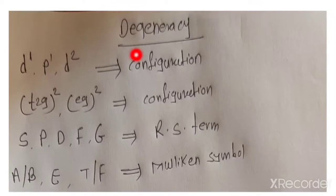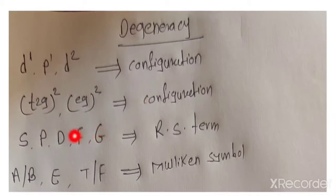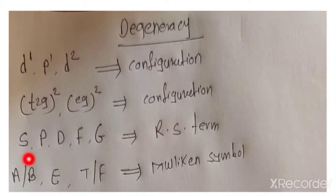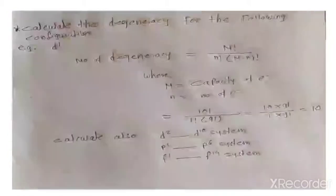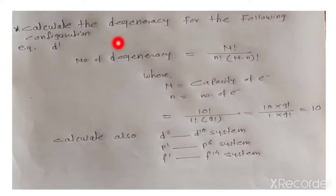The degeneracy for a configuration — that means a configuration such as D1, P1, D2 — or sometimes T2g, Eg, they are also configurations. The RAS terms S, P, D, F, G are also RAS terms. And A, B, E, T, or the Mulliken symbols — we need to calculate the degeneracy for configurations, for RAS terms, and for Mulliken symbols. That part is discussed here.